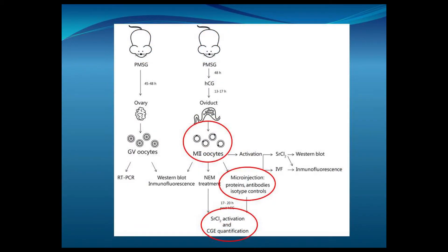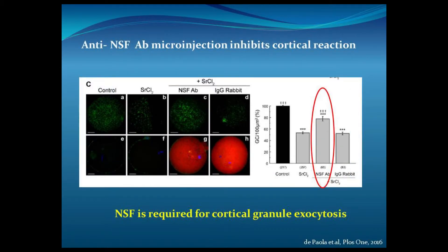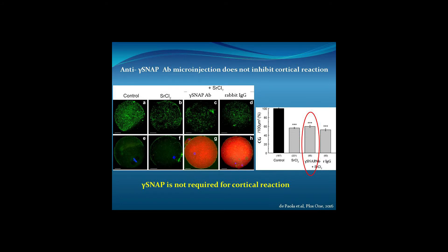We collected oocytes, microinjected different reagents that can block the proteins we are studying, and then using the functional assay, we quantified the cortical reaction. We found that when we microinjected anti-alpha-SNAP, the cortical reaction was inhibited — representative images on the left show every condition analyzed. This result says that alpha-SNAP is required for cortical reaction. Similarly, we also microinjected anti-gamma-SNAP, and in this case we didn't find any difference — meaning that gamma-SNAP is not required for cortical reaction.